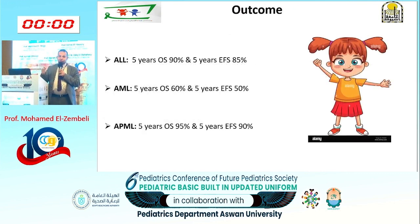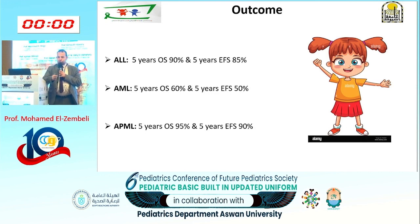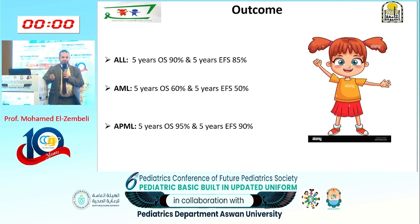Nora was diagnosed with Acute Lymphoblastic Leukemia. The 5-year overall survival for ALL is around 90%, and the 5-year event-free survival is 85%. For Acute Myeloid Leukemia, the 5-year overall survival is 60% and event-free survival is 50%. For Acute Promyelocytic Leukemia (AML-M3), which is a subtype with a better prognosis, the 5-year overall survival is 95% and event-free survival is 90%.